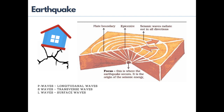During an earthquake, places close to the epicenter face the most damage, and the strength of the earthquake declines as you move away from the center. Earthquake vibrations move in wave form and there are three types: P, S, and L waves, also known as longitudinal, transverse, and surface waves.